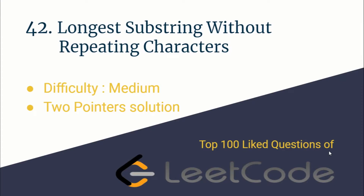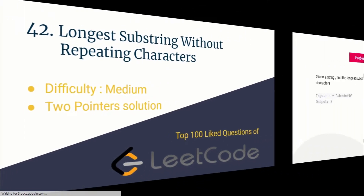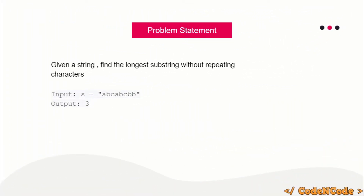Hello guys, this is Code and Code, and this is the video editorial for the problem 'Longest Substring Without Repeating Characters' from LeetCode. The problem statement is: given a string, find the longest substring without repeating characters. For example, if the input is 'abcabcbb', the length of the longest substring with no repeating character is three — it can be 'abc' or 'bca'. You only have to print the size of the longest such substring.